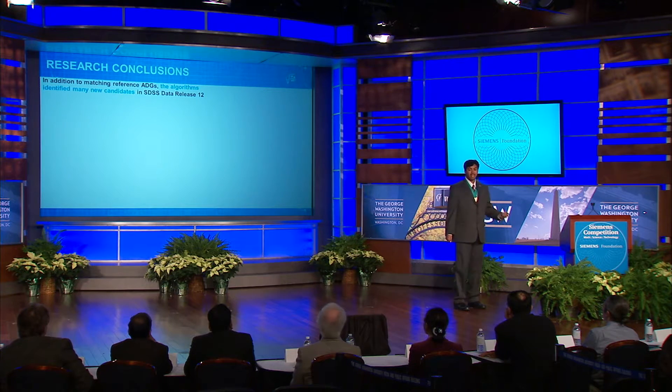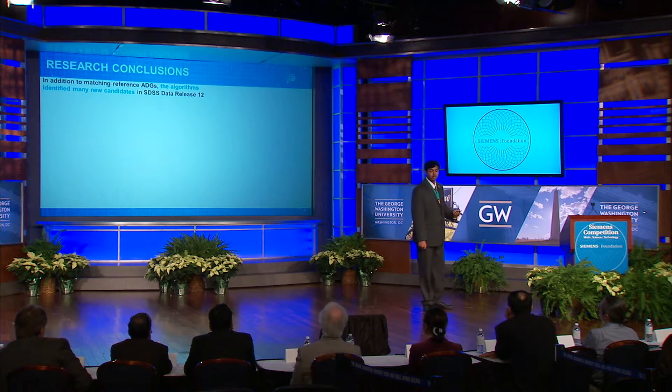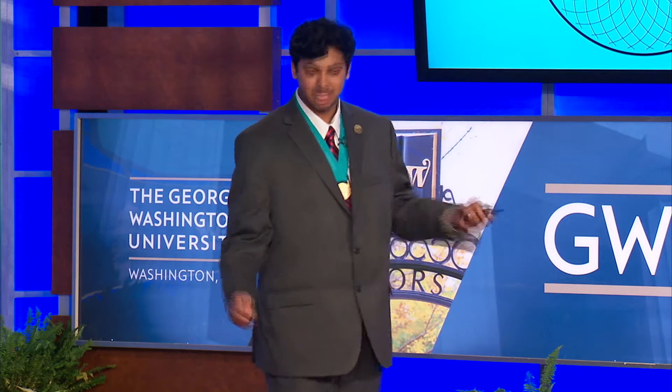I concluded that the algorithm was effective not only in matching reference ADGs, but also in identifying a number of new candidates. Notably, the bounding box algorithm is one of the first algorithms to specifically identify ADGs using optical means, and it also saves hundreds of hours of telescope time.